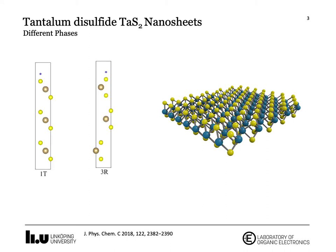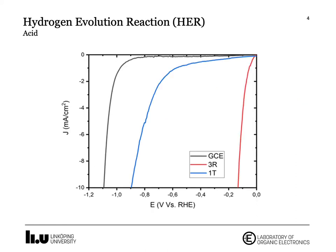We took two different phases of tantalum disulfide, and on your left you can see how they are architected. The evolution reaction in acid shows that the overpotential for the 3R sample is almost one fourth of that of the 1T.